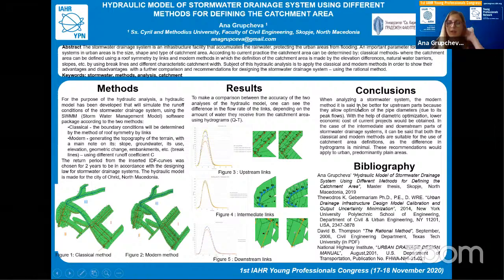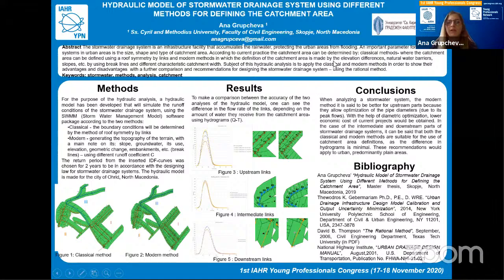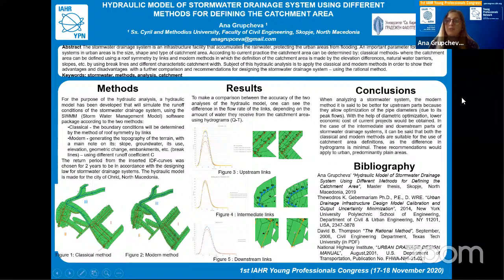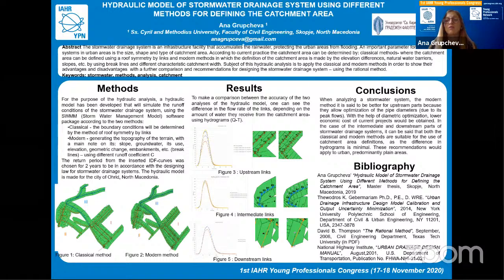We used the rational method for calculating catchment area discharge, with different C coefficients for every catchment area — each catchment was divided into subcatchment areas with different C coefficients. As a conclusion, when analyzing a stormwater system, the modern method is better for upstream parts because it allows optimization of pipe diameter due to its peak flows, leading to lower economic costs. For intermediate and downstream parts, both the classical and modern methods are suitable for catchment area definitions, as the difference in hydrographs is minimal. These recommendations apply to predominantly urban planar areas.